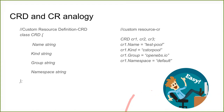Kubernetes exposes this API and any partner like OpenEBS can write their own software, plug into Kubernetes, and provide it to users.